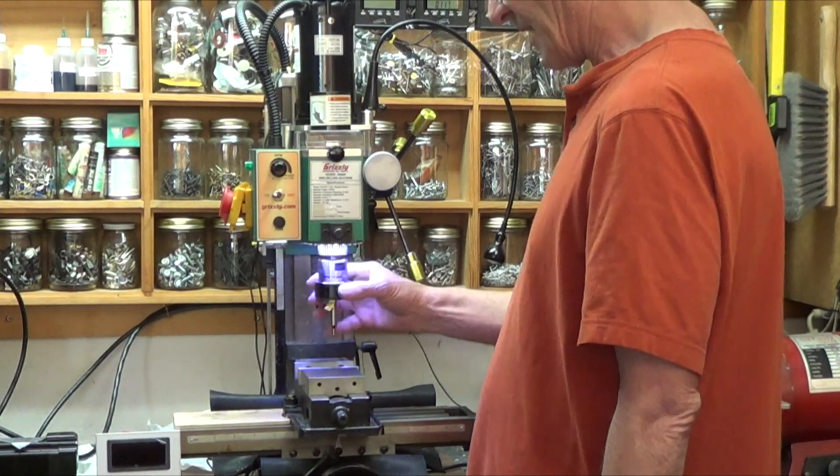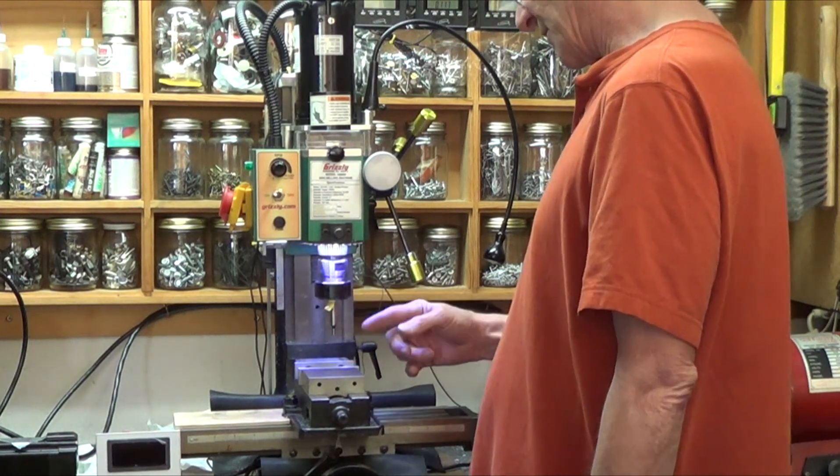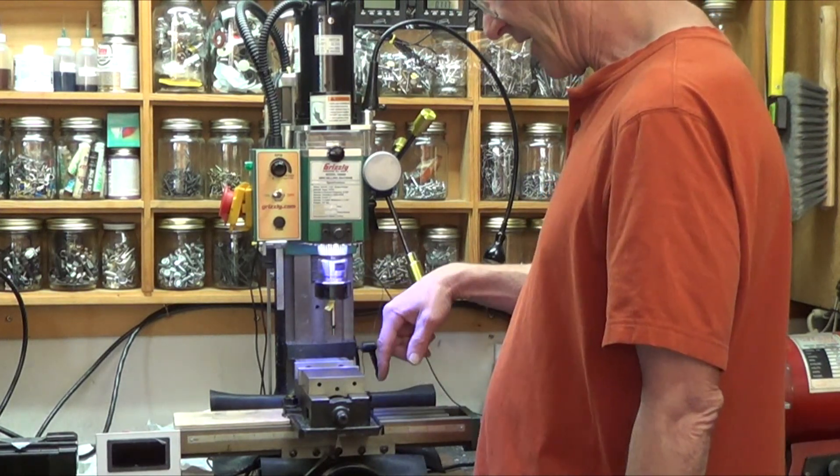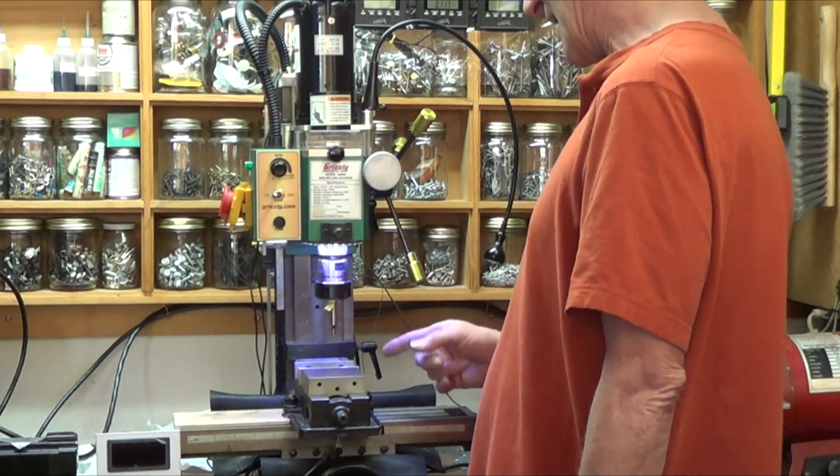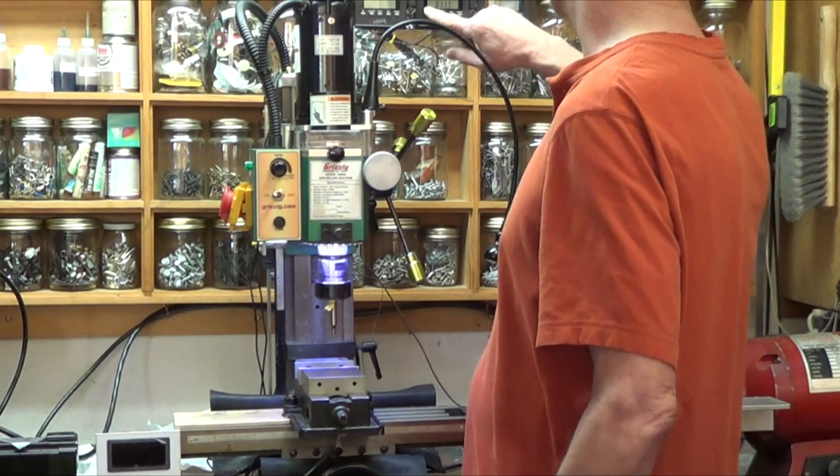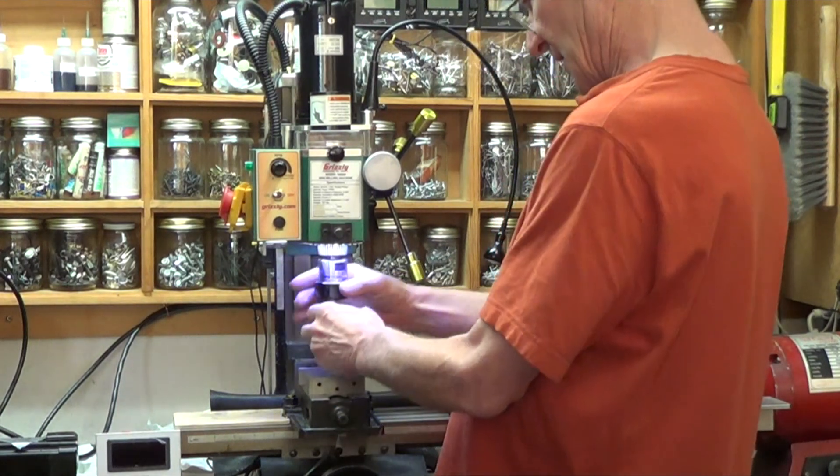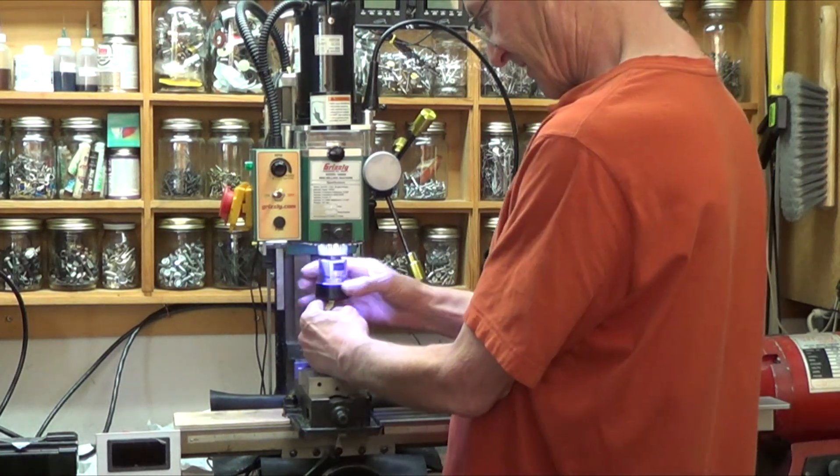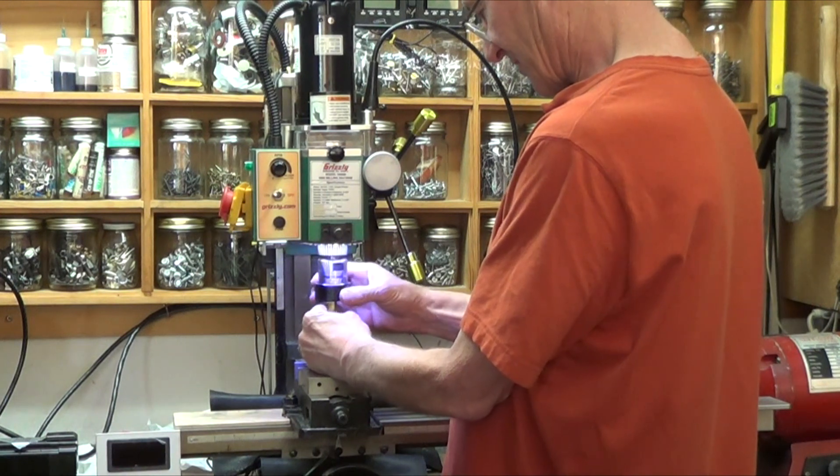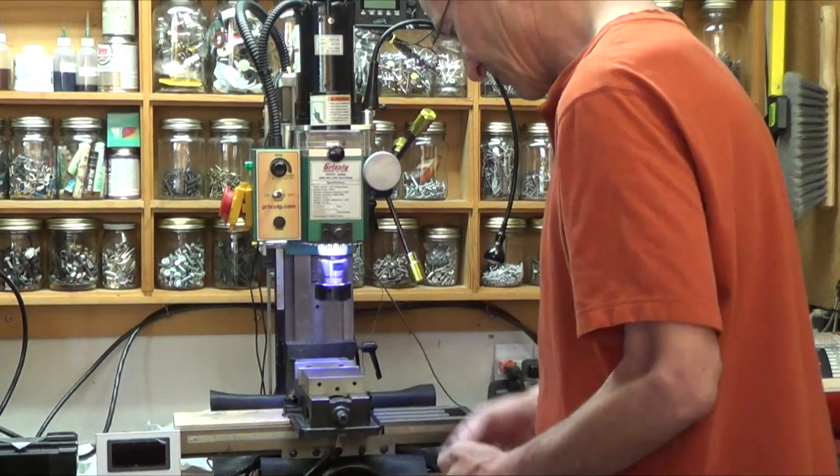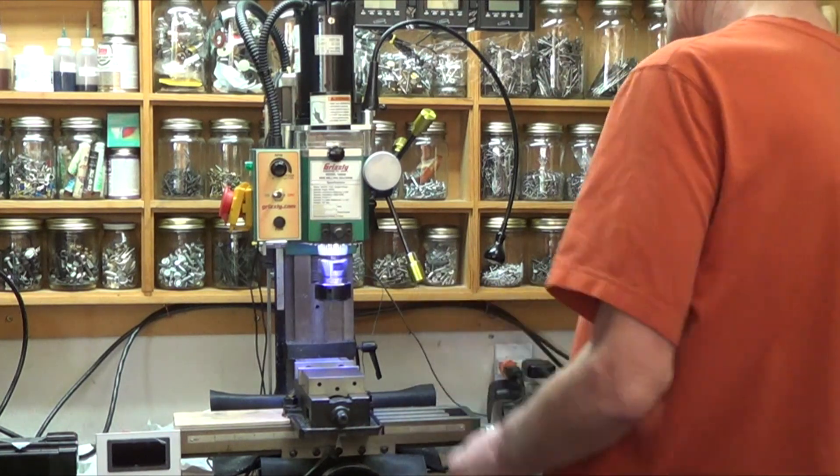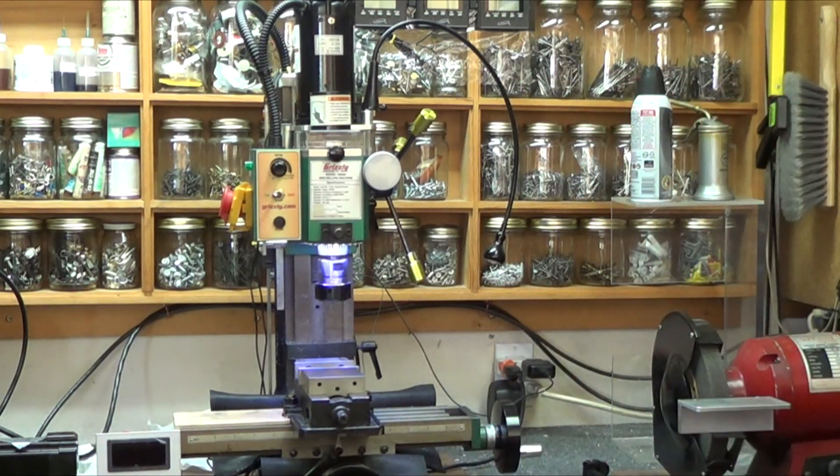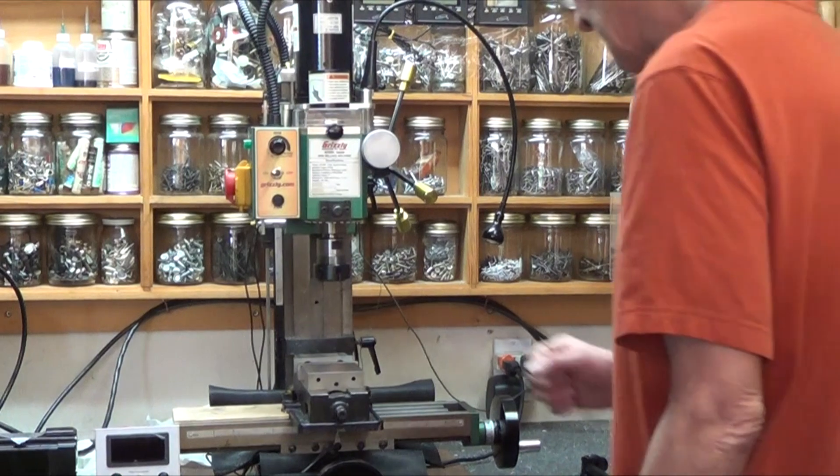What you want is an electronic edge finder because it's going to account for whatever runout you have in your collet or your cutter or whatever. Because the second it hits at all, period, it's going to light up and tell you that's where the true edge is. You don't believe me, run this experiment yourself and you'll see.